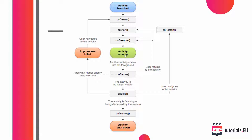Let's say your activity is running and then another activity comes into the foreground — for example, someone calls the user while your activity is open, or the user gets out of the application and does something else. Then the onPause method is called directly. If the user returns to the activity rather quickly, only the onResume method will be called again. If the activity is invisible for a longer period of time and the user doesn't come back quickly, then the onStop method will be called.